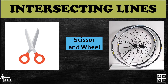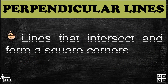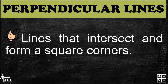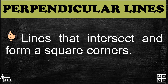Next and last are perpendicular lines. Perpendicular lines are lines that intersect each other at a given point and form square corners. They share the same definition as intersecting lines, but the difference is that perpendicular lines form square corners while intersecting lines do not.